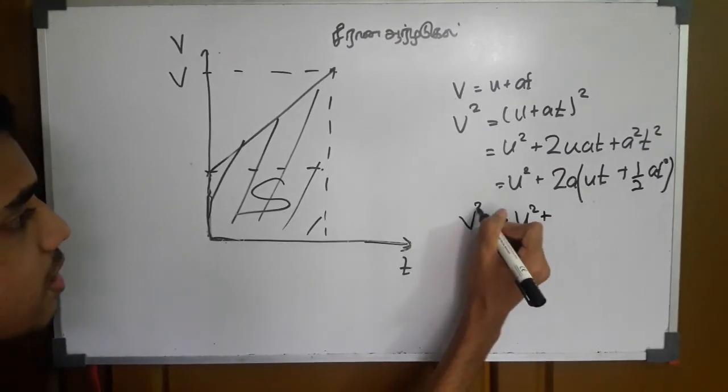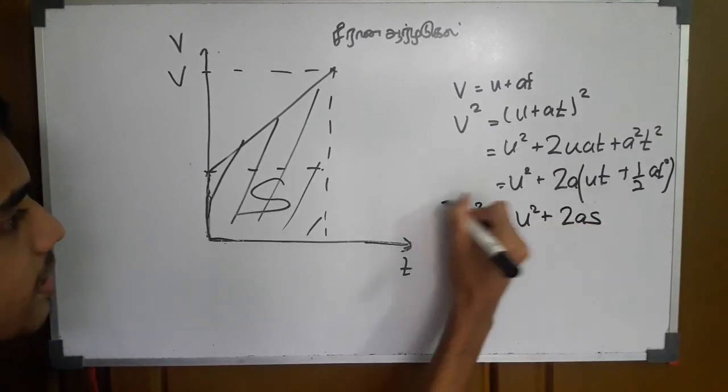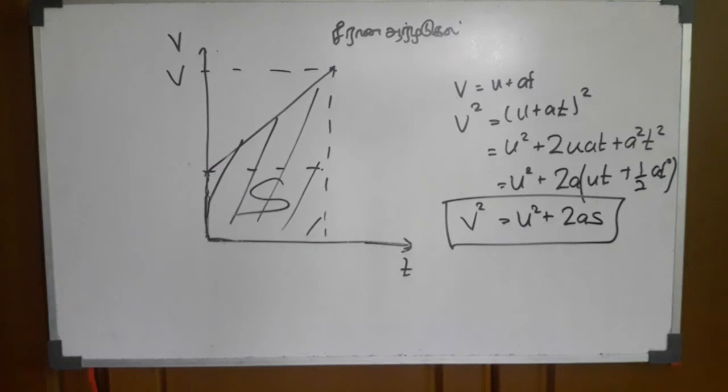V squared equals u squared plus 2a·s. So, this is the equation. It's only 4 equations.